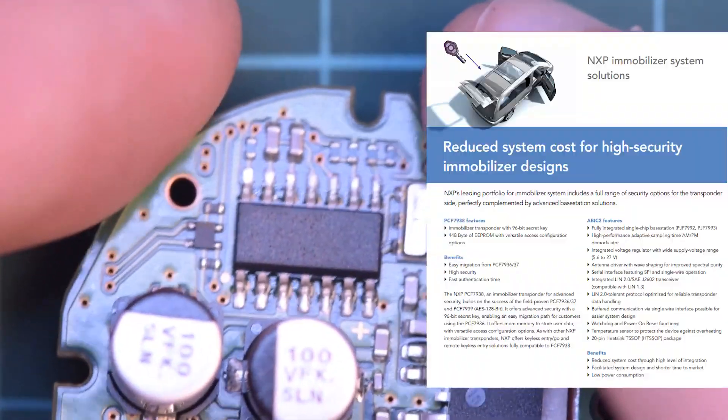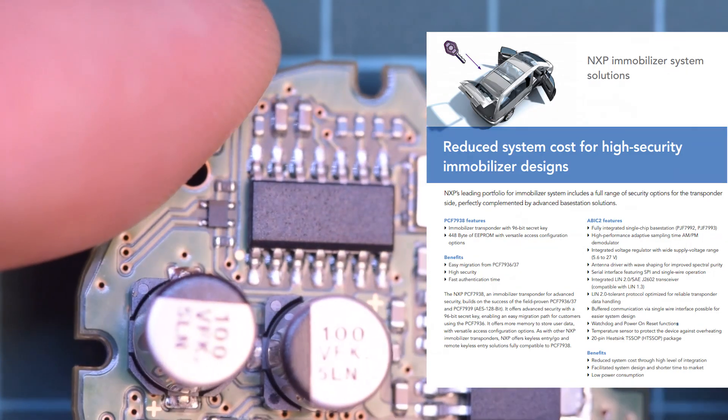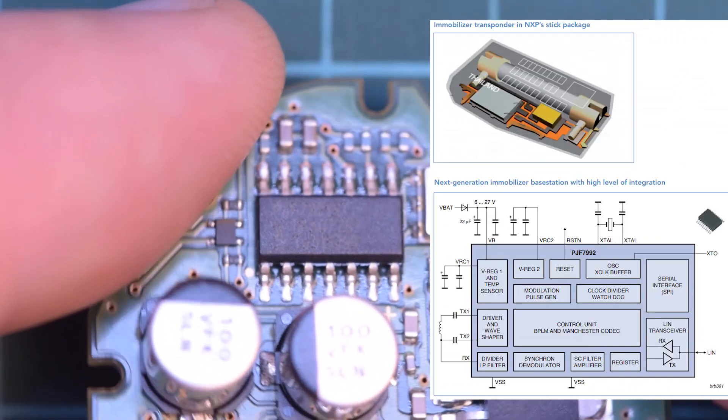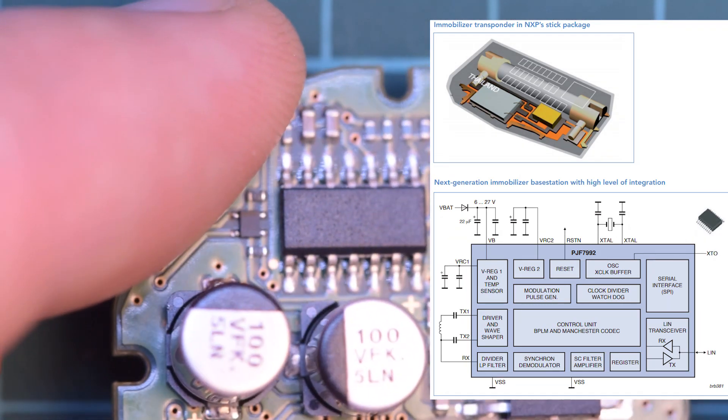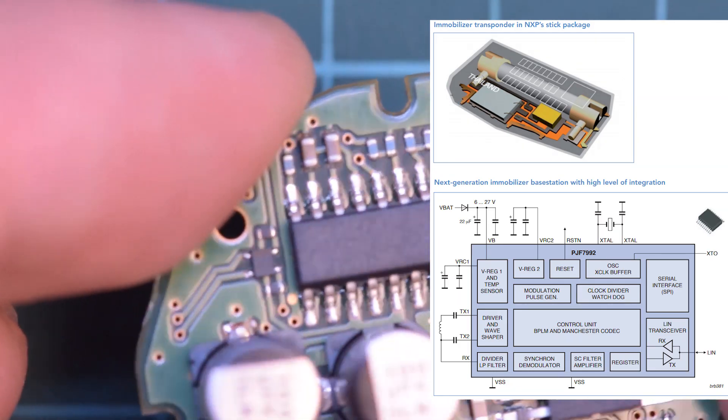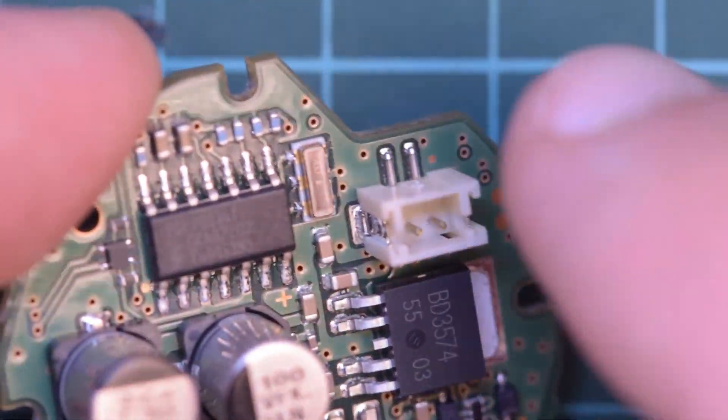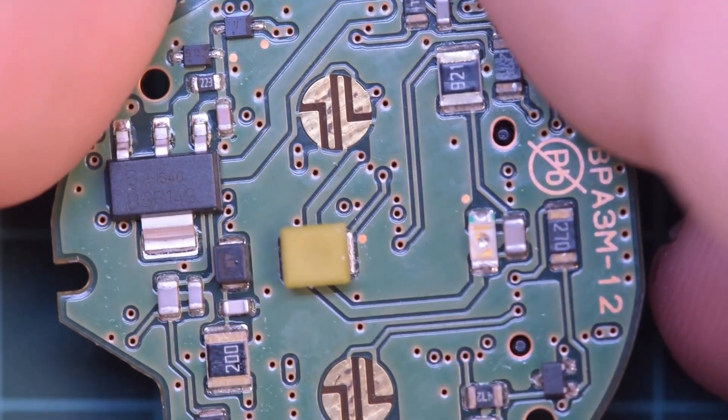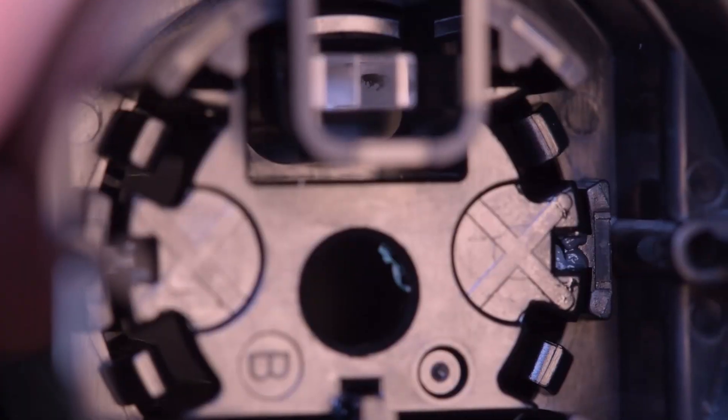And then up here you have an NXP PCF9918, which is a specific microcontroller for immobilizers, for security systems. So this is specific to that. I couldn't find a detailed data sheet on this, probably for a good reason, but it is what it is. And there's the little plug that leads to the front of the switch. So we need to switch to lower magnification and see if we can dig into that switch any deeper. Before we switch magnifications, I think I figured out where we need to go.